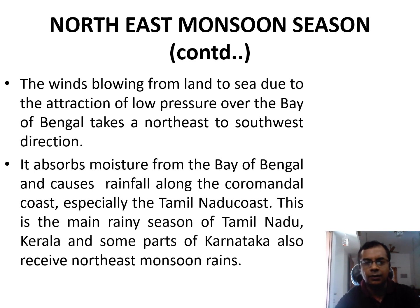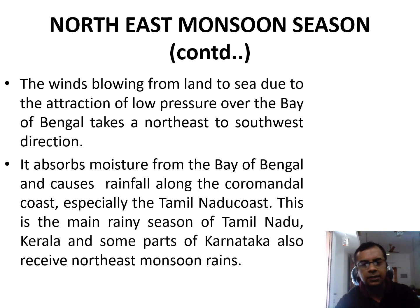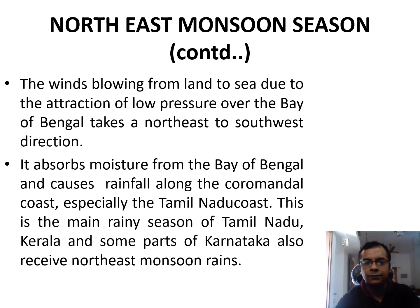This can absorb moisture from the Bay of Bengal and causes rainfall around the Coromandel Coast, especially the Tamil Nadu coast. This is the main rainy season of Tamil Nadu. Kerala and the southern parts of Karnataka also receive Northeast Monsoon rains.